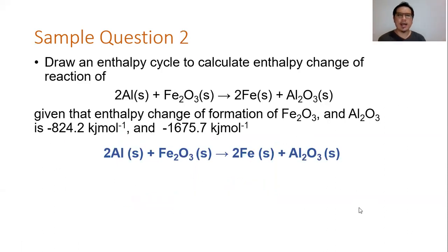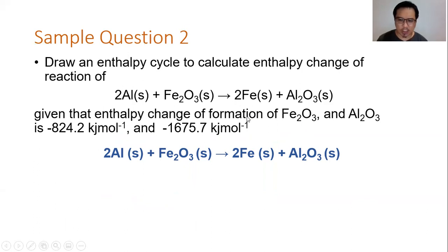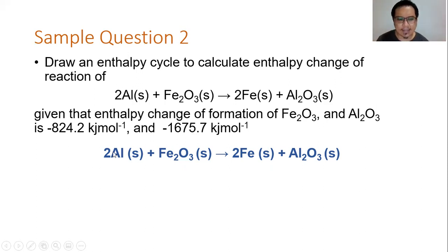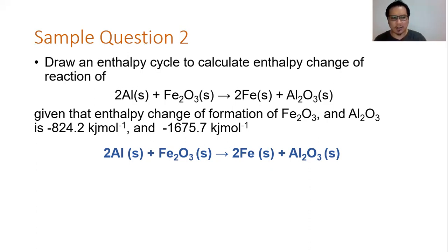Example two: the reaction between aluminium and iron(III) oxide to form iron and aluminium oxide. The enthalpy change of formation data are given — specifically the enthalpy change of formation of iron(III) oxide and aluminium oxide. We want to find the enthalpy change of this main reaction, so we construct a Hess's Law cycle using the enthalpy of formation data.